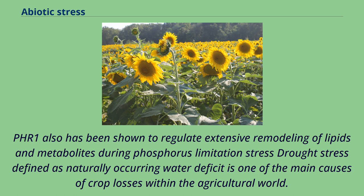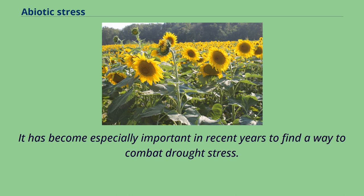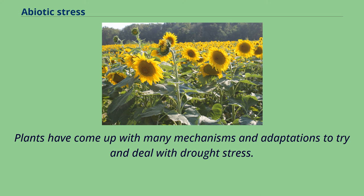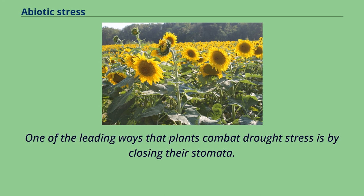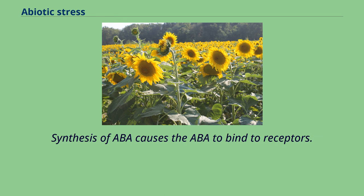Drought stress, defined as naturally occurring water deficit, is one of the main causes of crop losses within the agricultural world, due to water's necessity in so many fundamental plant growth processes. It has become especially important in recent years to find ways to combat drought stress, as a decrease in precipitation and subsequent increase in drought are extremely likely in the future due to global warming. One of the leading ways that plants combat drought stress is by closing their stomata. A key hormone regulating stomatal opening and closing is abscisic acid (ABA) — synthesis of ABA causes it to bind to receptors, affecting the opening of ion channels, thereby decreasing turgor pressure in the stomata and causing them to close.